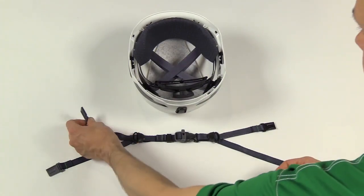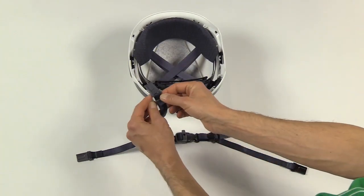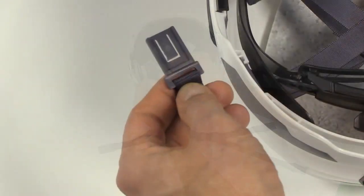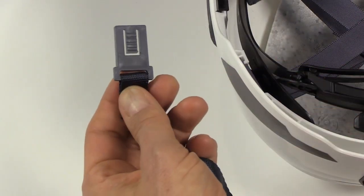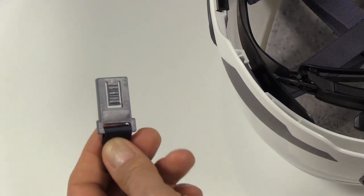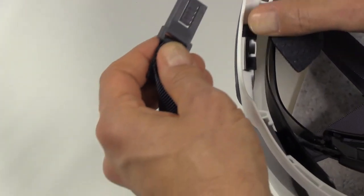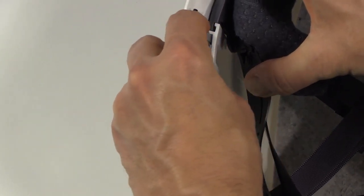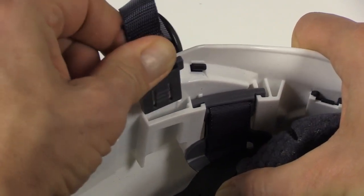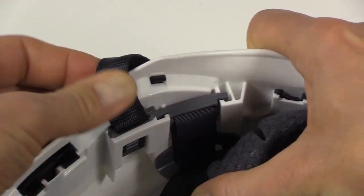Begin with the left side chin strap clip. This is the back of the clip, and here's the front of the clip. Ensure that the front of the clip is facing the interior of the helmet when you insert it and click it in so you hear the click.